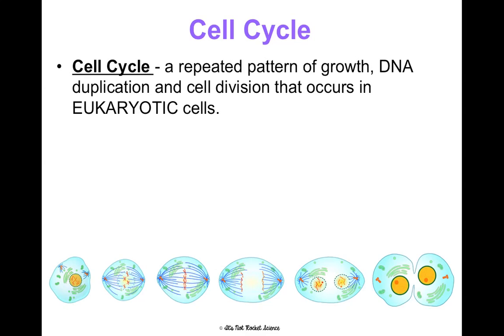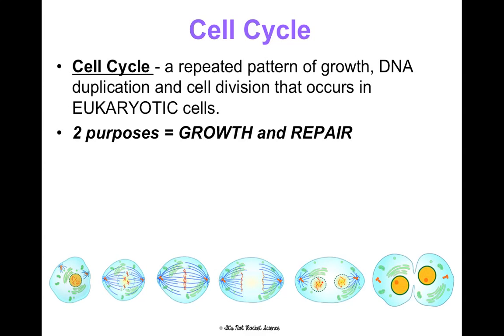Let's move on and talk about the cell cycle. This is how we make that transformation from being a fetus to being a grown organism, because the cell cycle is a repeated pattern of growth, DNA duplication, and cell division that occurs in eukaryotic cells — cells like animals, plants, fungus, and protists all have. There are two purposes for it: growing and repairing.